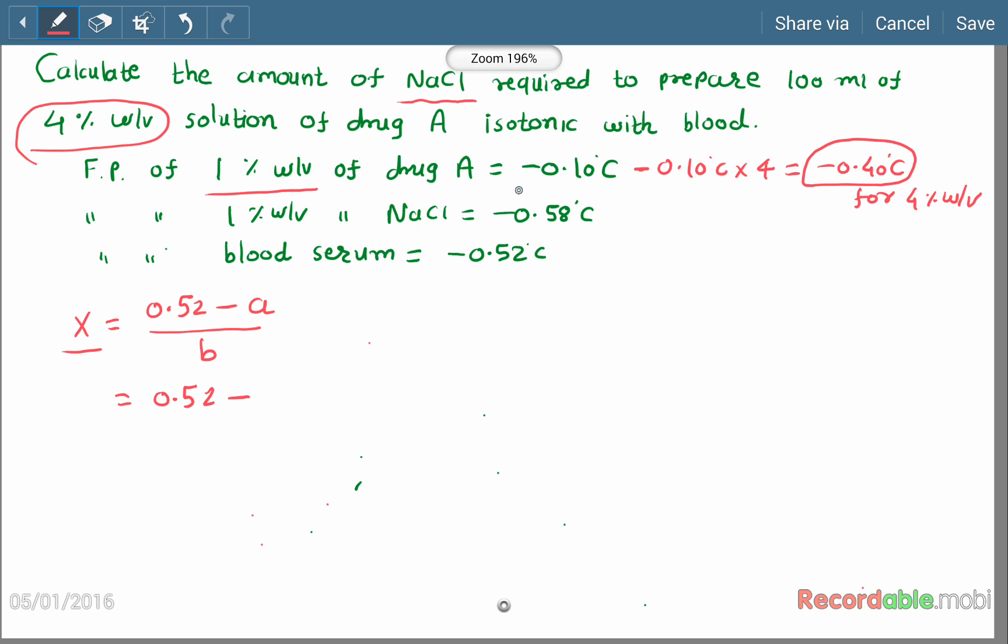So 0.40 divided by b. The freezing point of 1% sodium chloride is 0.58, which equals 0.12 divided by 0.58.